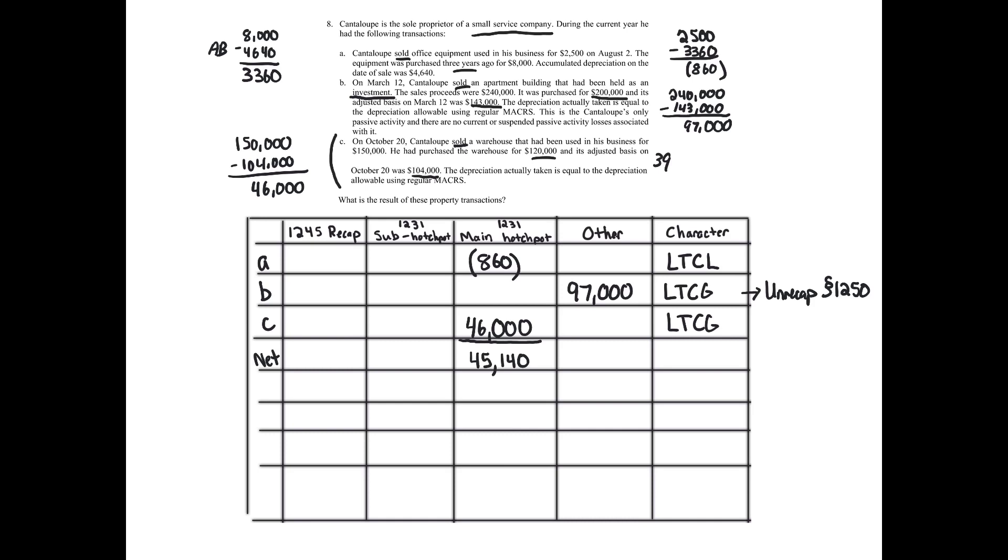It's the lesser of the amount of depreciation taken on it or the realized, recognized gain. I'm not going to calculate that for you, but that's what it would be. C, same thing. We have a warehouse. That's real property that's been depreciated. Unrecaptured Section 1250 applies. The 25% rate, it's the lesser of the depreciation taken or the realized, recognized gain. We are done with this problem.